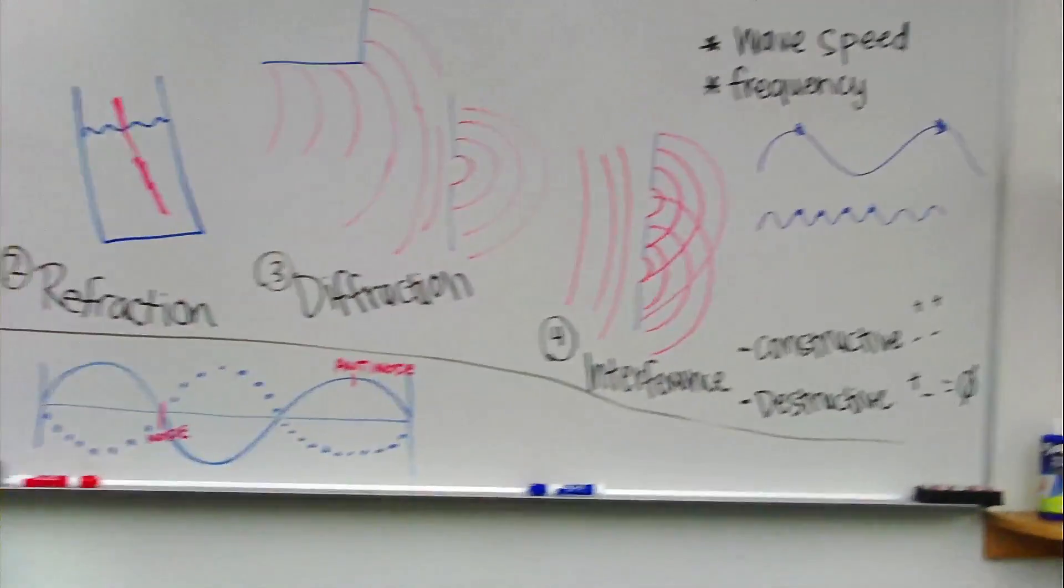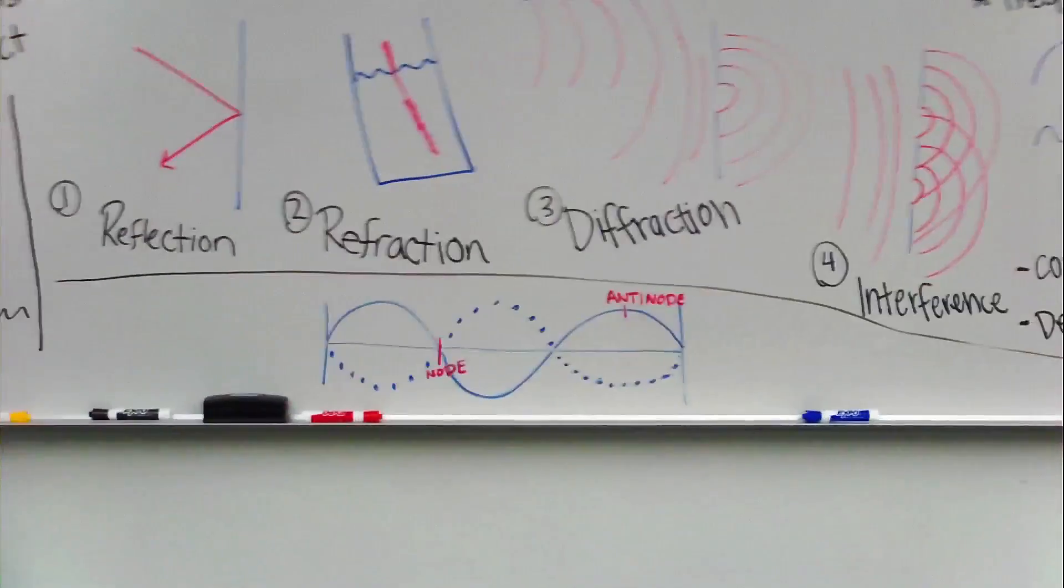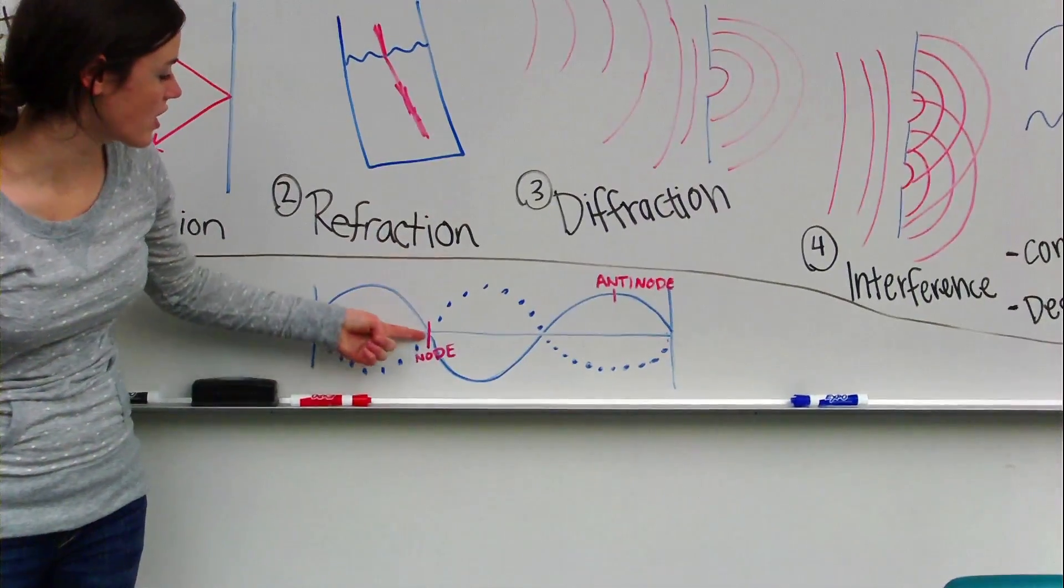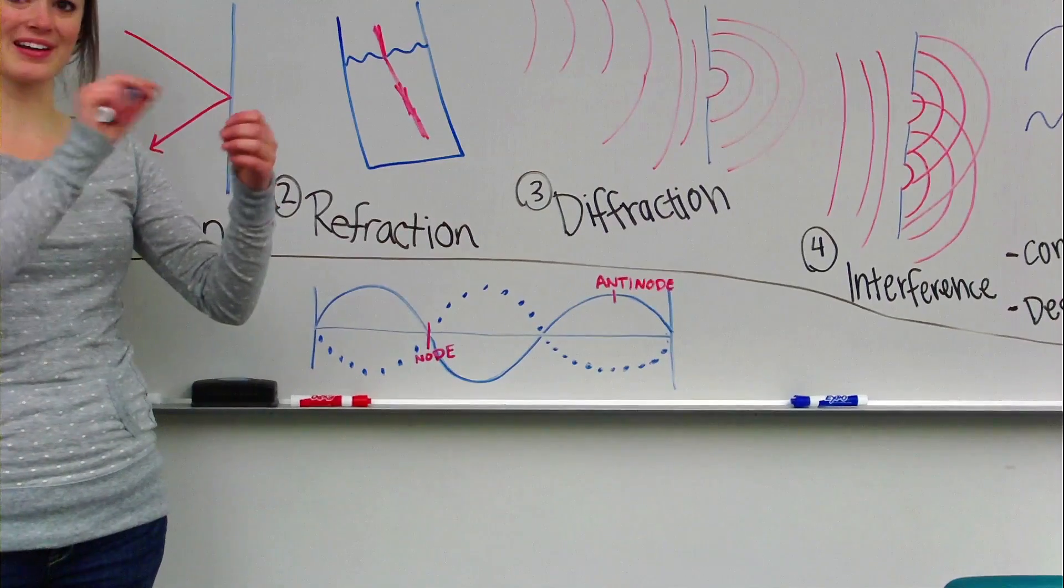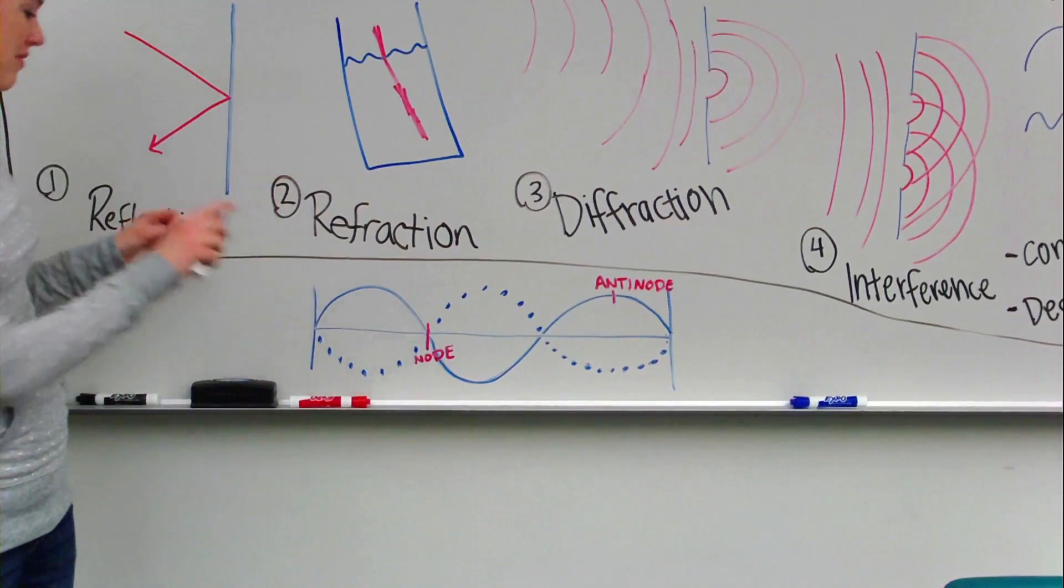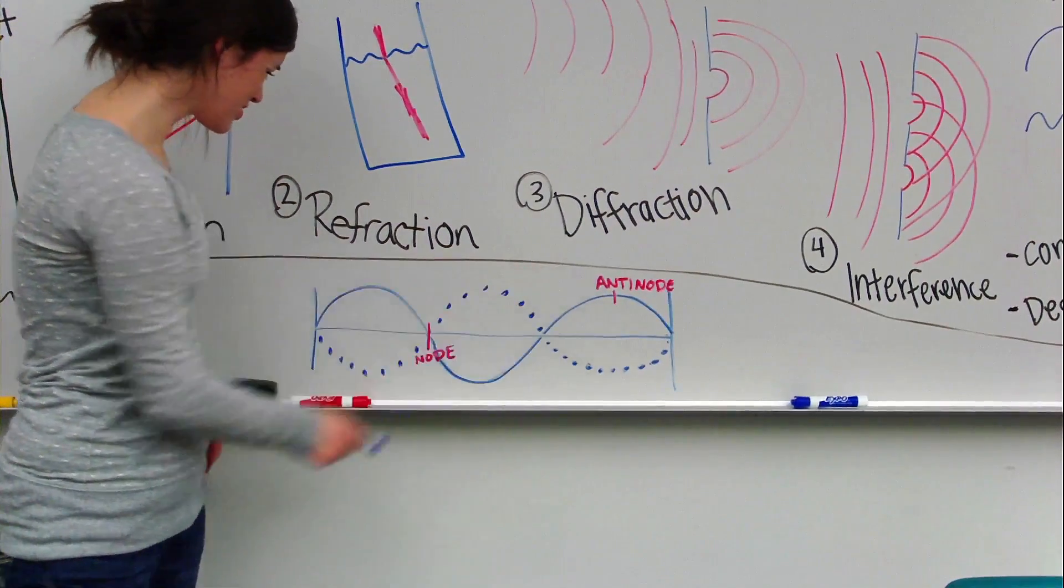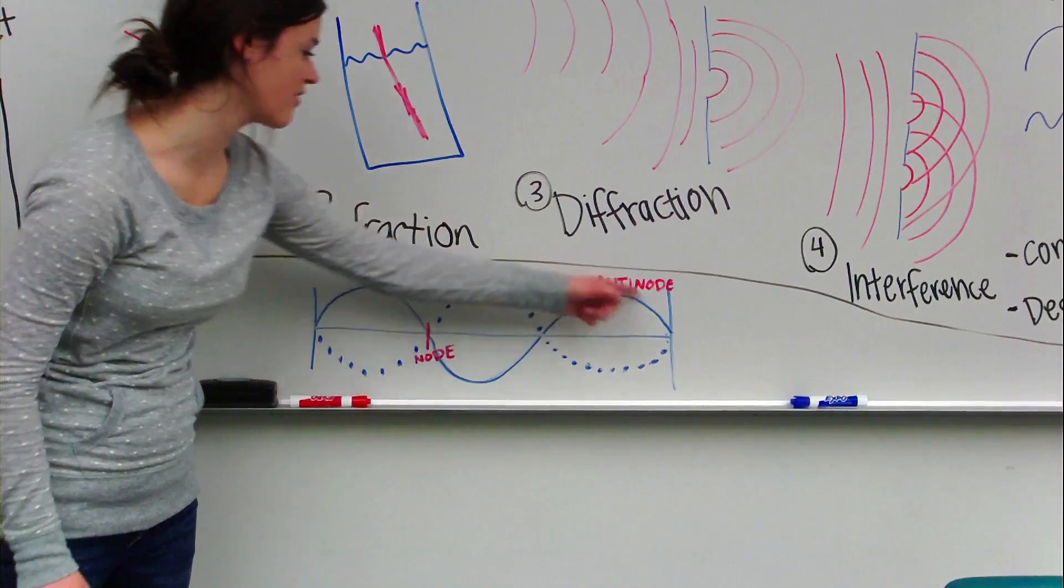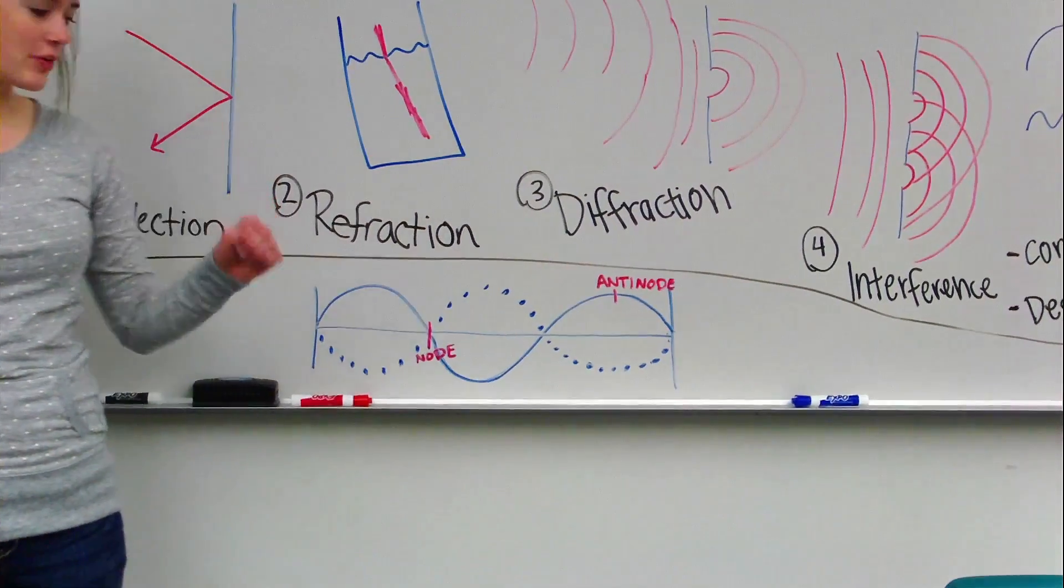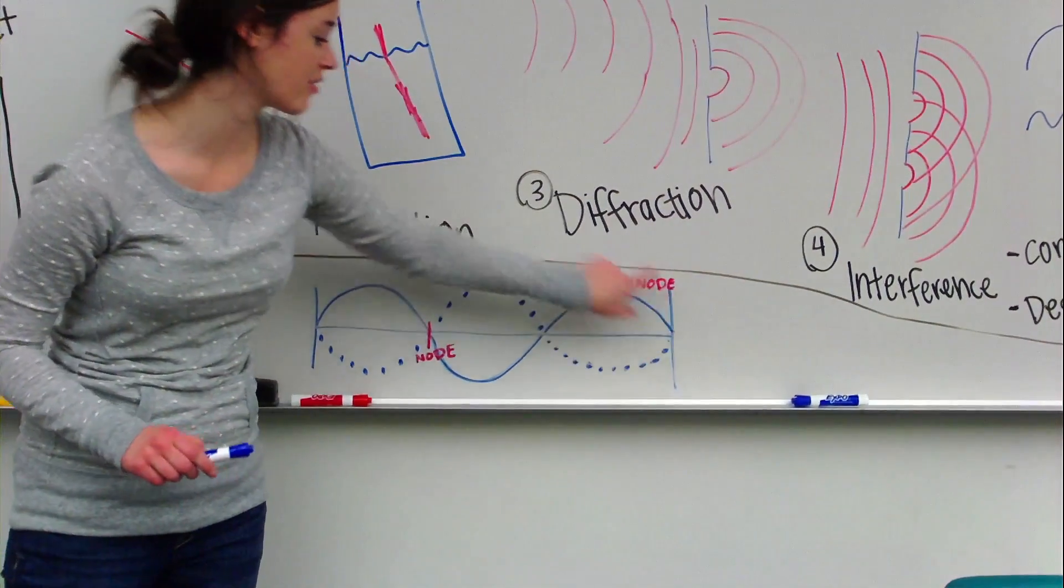All right. So, next is standing waves. So, I mentioned nodes before. That's a point where it's going to appear that there's no wave moving. So, as this wave is traveling, it gets at the perfect frequency that as it hits the end here and reflects back,